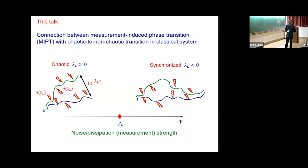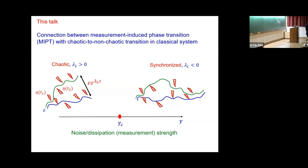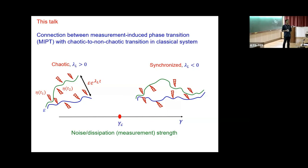In this kind of equation, there are transitions known in classical nonlinear dynamics called synchronization transitions. By tuning the noise or dissipation strength — which maps to measurement strength from the quantum limit — you get a transition. In one phase with less noise, i.e., weak measurements, classical trajectories that start close together deviate exponentially with a positive Lyapunov exponent. However, increasing the noise causes these trajectories to come close together instead, making the Lyapunov exponent negative. This is known as the synchronized phase or stochastic synchronization. I will argue this is happening in many of these measurement models.